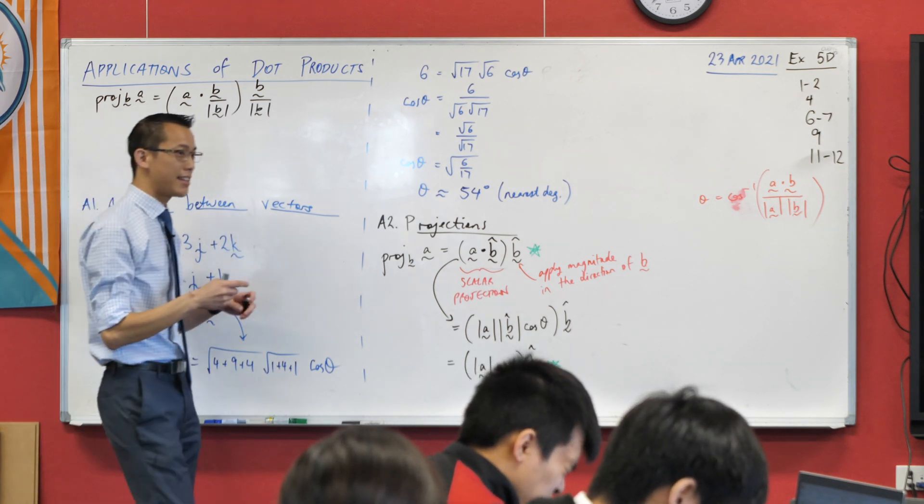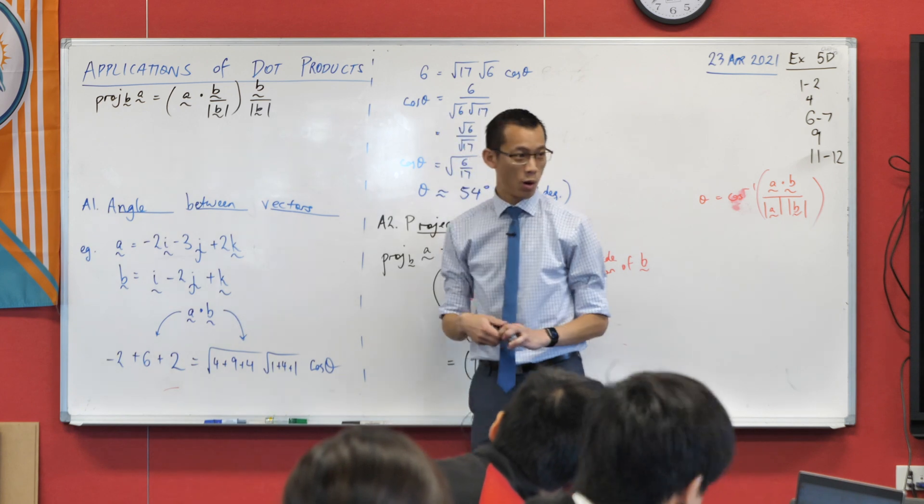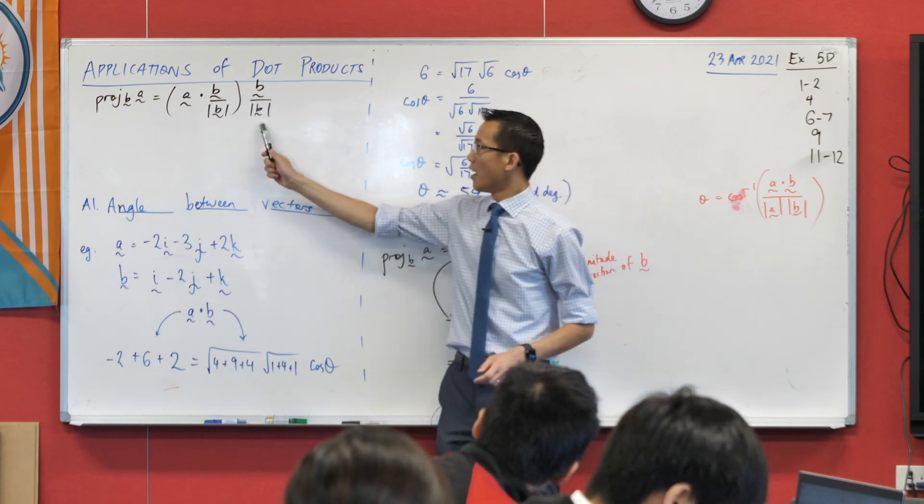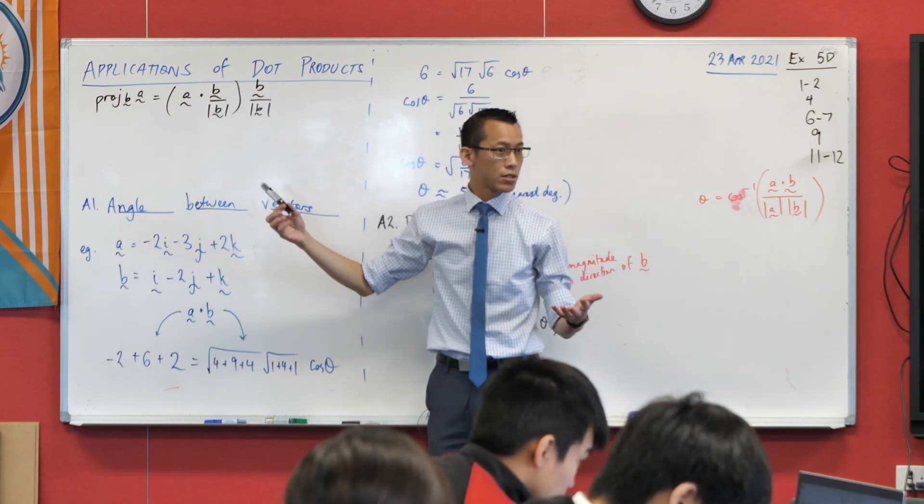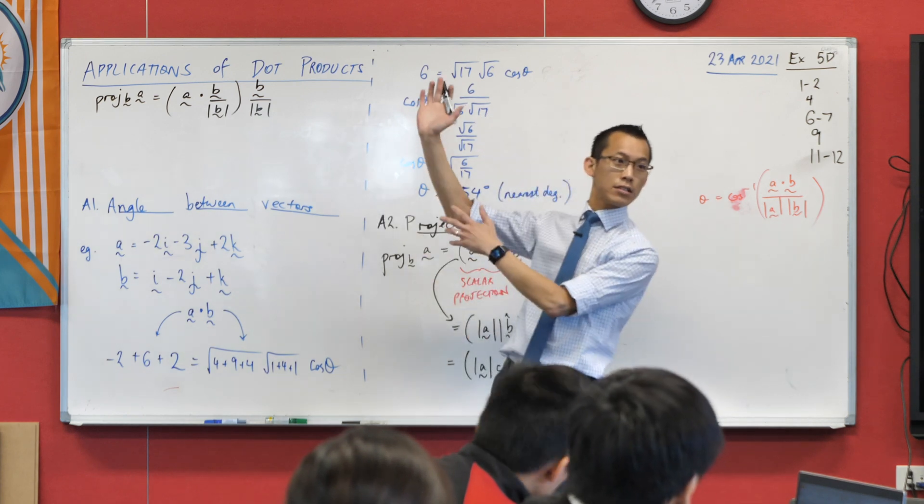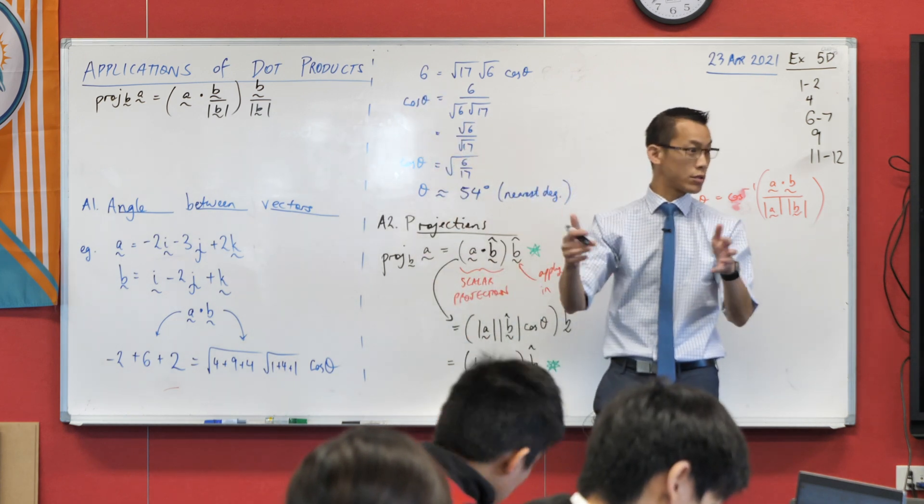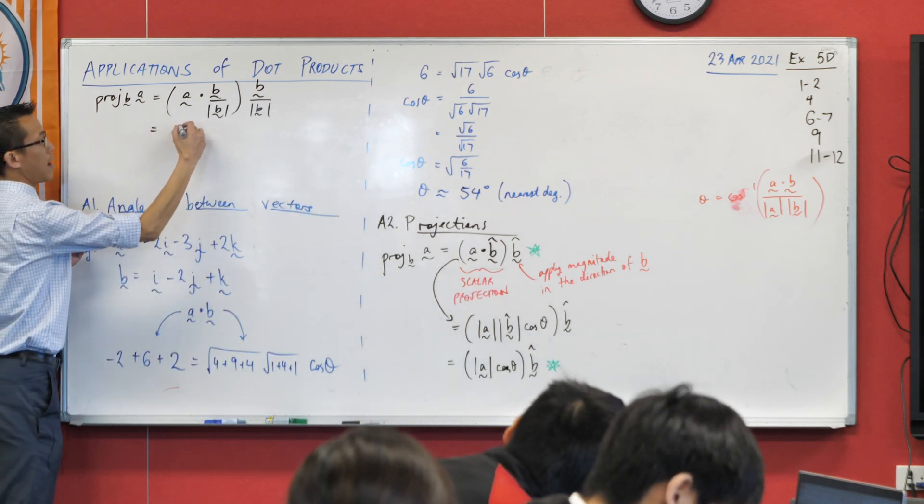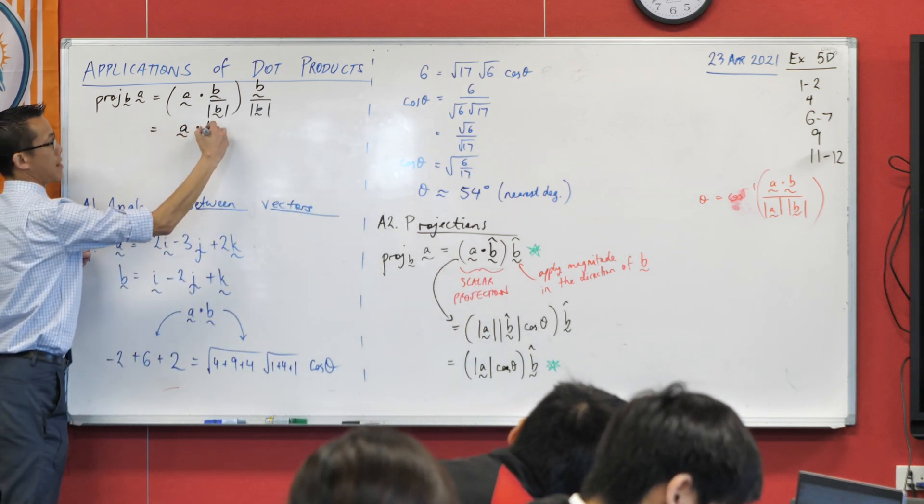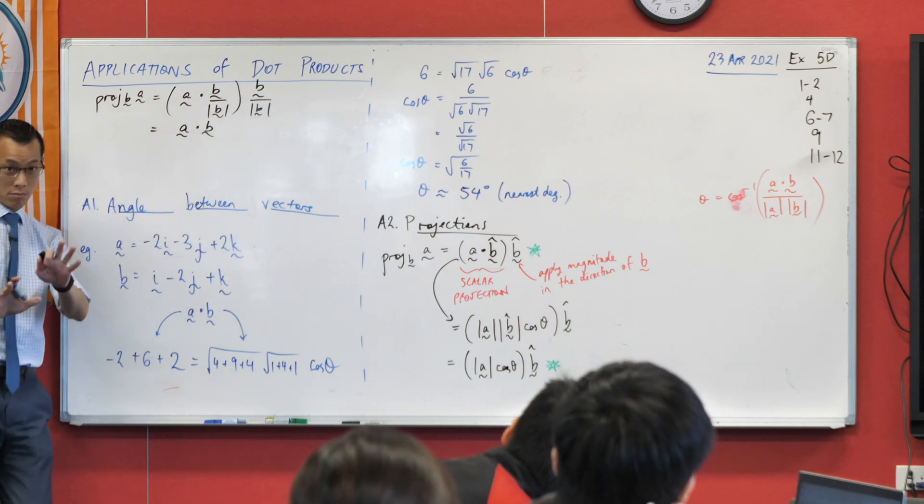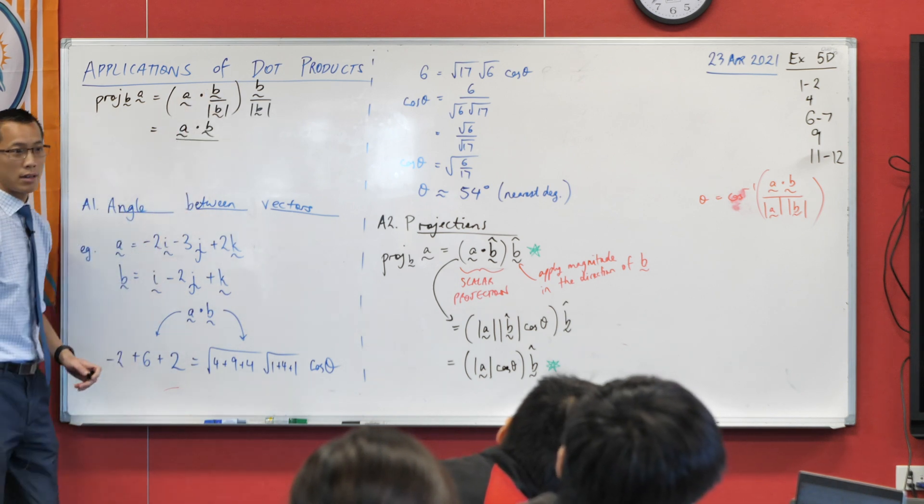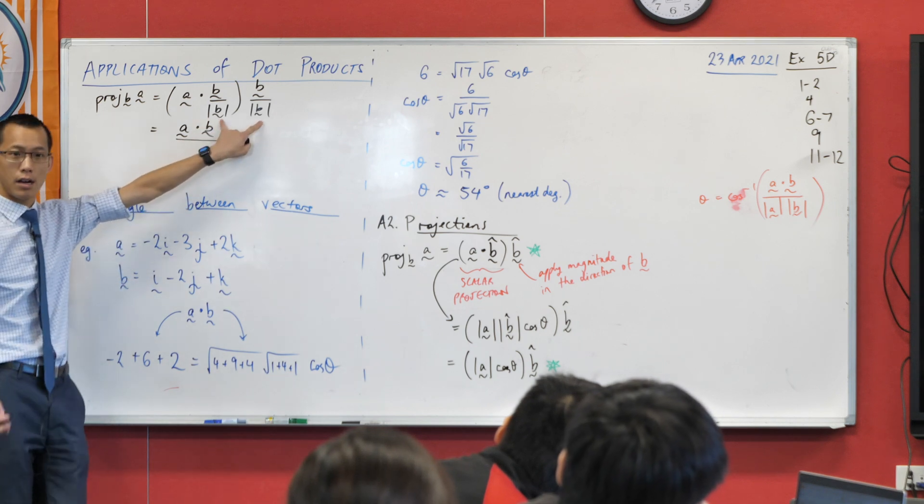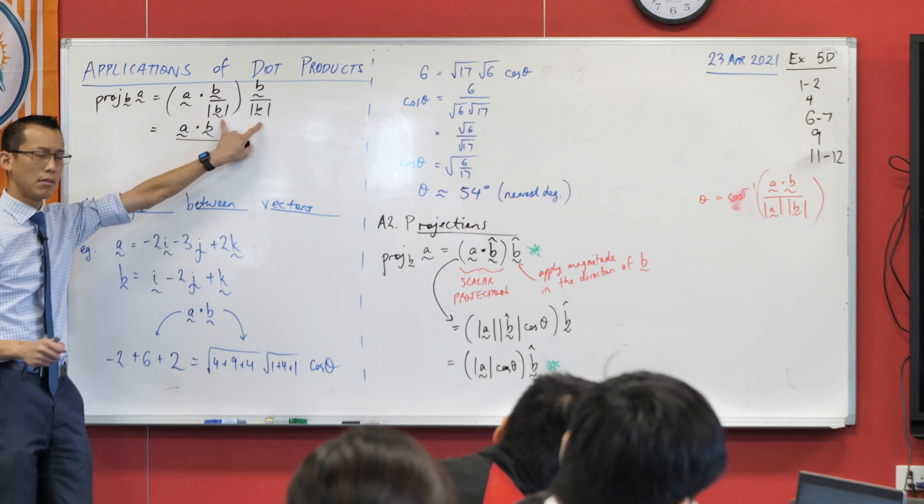Now, the reason why this ends up being useful to me is, these are just scalars. Do you agree? So because they're just scalars, you can just kind of factor them out. You can sort of move them wherever is appropriate. So what I can do is I can say, I've got A dot B up here in the top. So far, so good. On the denominator, these two scalars here, I can combine them.